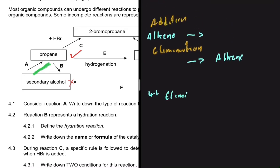The answer to 4.1 is elimination — because if a reaction ends with an alkene it's elimination, if it starts with an alkene it's addition, and if none of that applies then it is a substitution reaction.